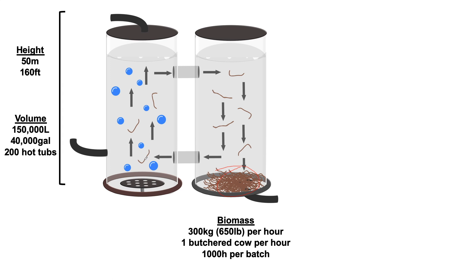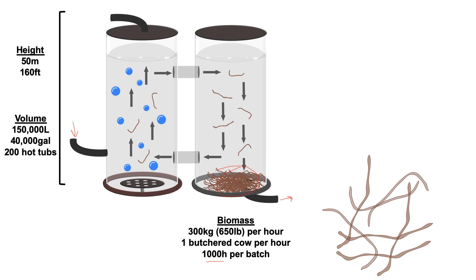That biomass will be collecting at the bottom of the right reactor. As that collects, the corn facility is going to pump some of it out so that the tank doesn't get filled up, and in the meantime they're going to pump in new media on the left. What that allows is a continuous cultivation for a thousand hours before they stop the reaction.